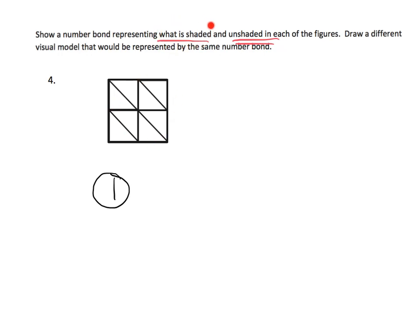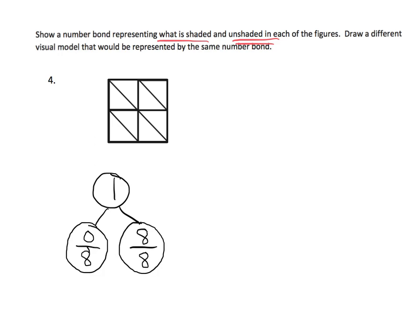But nothing has been shaded. So, our number bond is going to be zero eighths is shaded and eight eighths is unshaded. I included this problem just because I thought that's a little on the sneaky side. Now, we're going to draw a different visual model that would be represented by that same number bond.